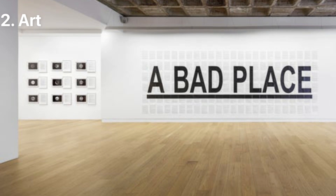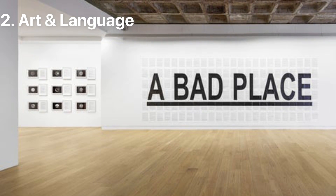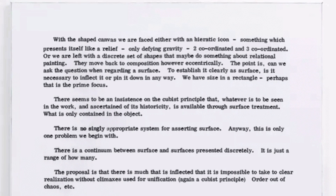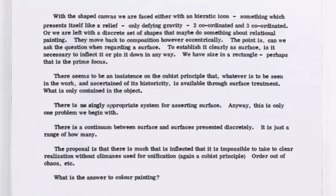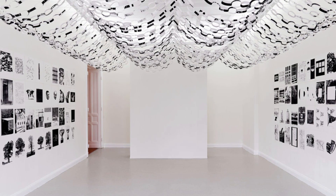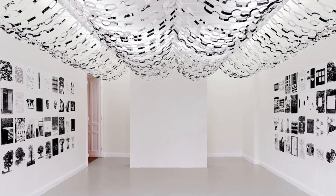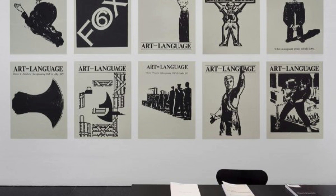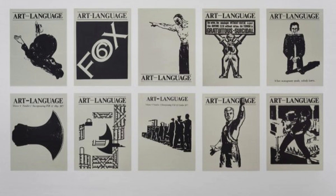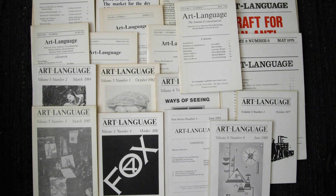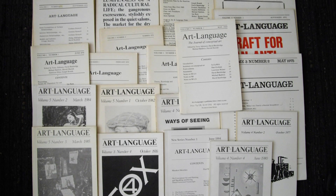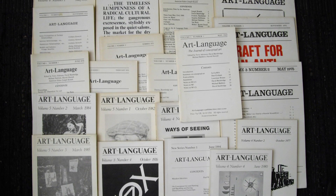Number two: Art & Language. Art & Language is a collaboration of artists who pioneered English conceptual art, officially founded in 1968, questioning the critical assumptions of modern art as a practice, as well as modern art criticism and recent historiography. Michael Baldwin, David Bainbridge, Terry Atkinson, and Harold Hurrell founded the group in the late 1960s. Besides producing exemplary works of conceptual art, the collective also published the highly influential art periodical Art-Language: The Journal of Conceptual Art.